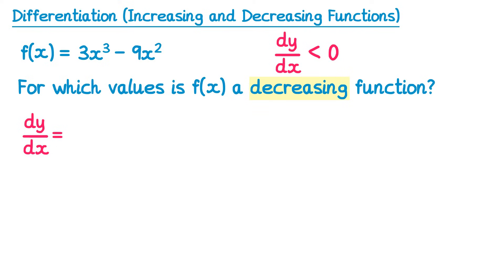3 times 3 is 9, and reduce the power from x cubed to x squared, so 9x squared. Then do 2 times negative 9, so negative 18, and reduce the power from x squared to just x, so negative 18x.